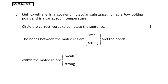This past paper question is from the National 5, 2016, written question 11c. Methoxyethane is a covalent molecular substance with a low boiling point and is a gas at room temperature. Circle the correct words to complete the sentence: bonds between the molecules are weak, and bonds within the molecule are strong.